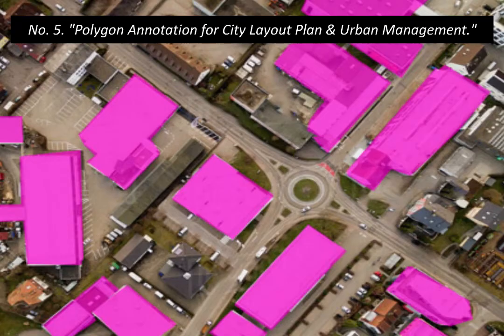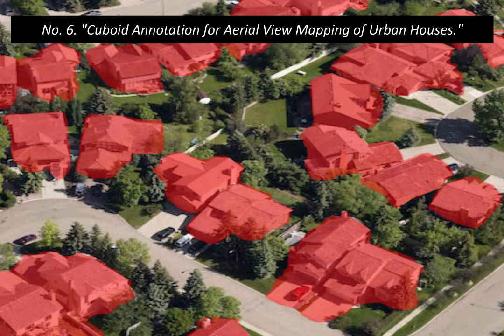Polygon annotation is used for city layout planning and urban management. Cuboid annotation is applied for aerial view mapping of urban houses.